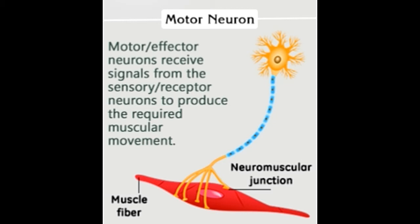Let's begin with the definition of a motor neuron. A motor neuron is basically a nerve cell whose function is to respond to sensory stimulation by producing the required muscular movement.